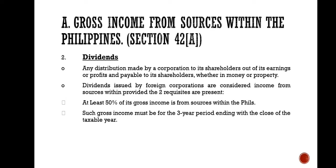Number 2 is dividends. Any distribution made by a corporation to its shareholders out of its earnings or profits, whether in money or property. Dividends issued by foreign corporations are considered income from sources within the Philippines, provided two requisites are present. Number 1 is at least 50% of its gross income is from sources within the Philippines. Such gross income must be for the three-year period ending with the close of the taxable year.